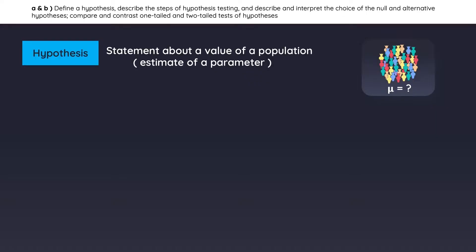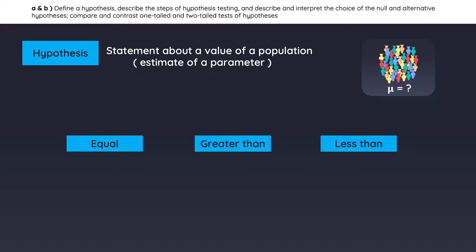There are three types of hypotheses: testing for equivalence, greater than, and less than. For example, analyst 1 believes the average age of the population is not equal to 18. Analyst 2 believes the average age is greater than 18. And the third analyst believes the average age is less than 18.